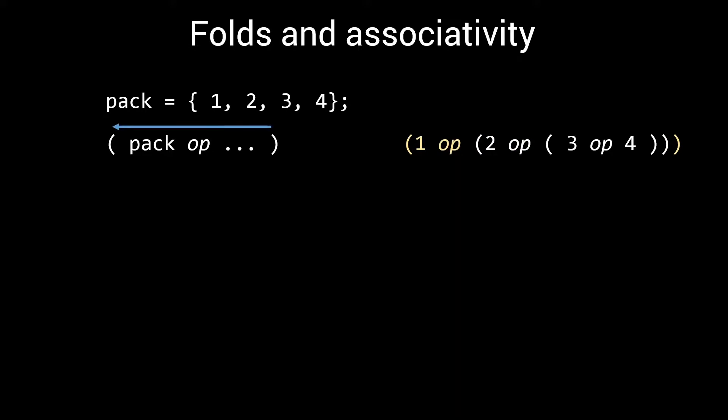Right fold, right to left application of the operator. If we put the parameter pack on the other side, we have a left fold. First the operator is applied to 1 and 2, then the result is combined with 3, and the result of that is combined with 4. Left fold, left to right application of the operator.